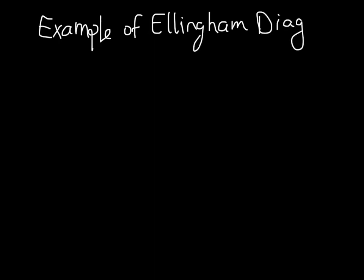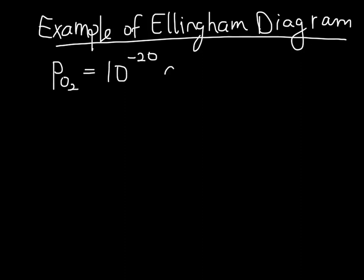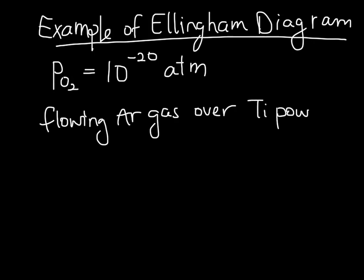Let's consider an example which uses the Ellingham Diagram. We want to establish in our furnace an oxygen partial pressure of 10 to the negative 20 atmospheres. We can do this by flowing argon gas over titanium powders and choosing a temperature which establishes this partial pressure in the titanium to TiO2 system.